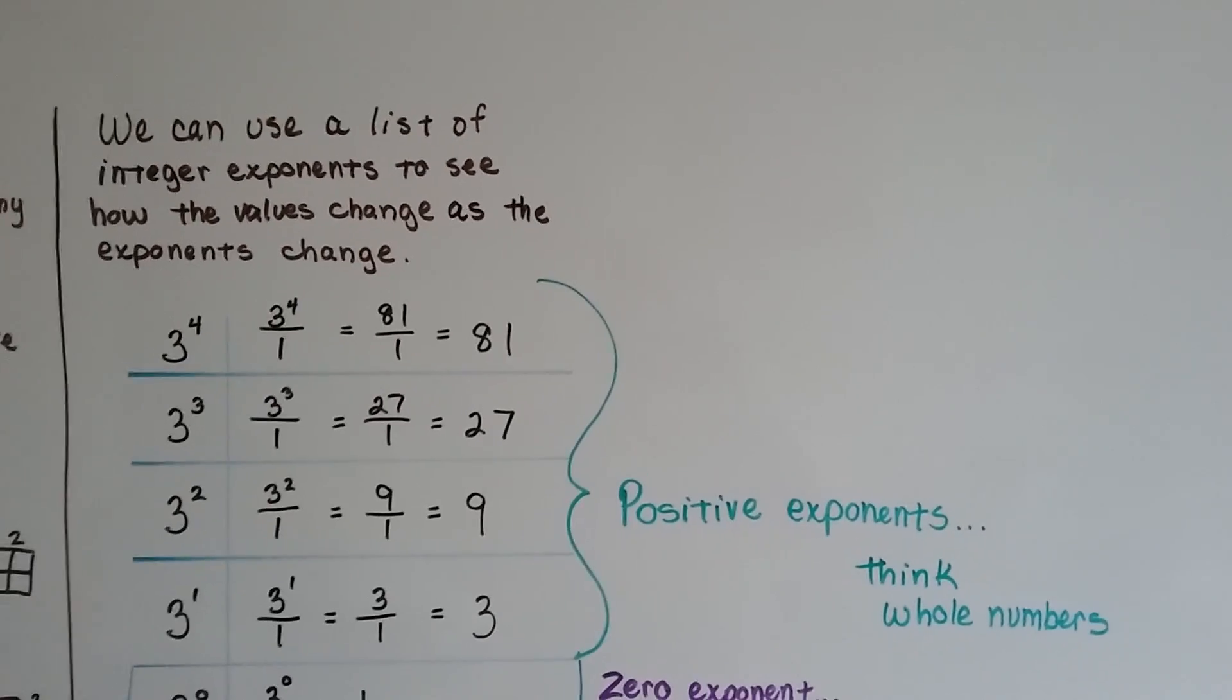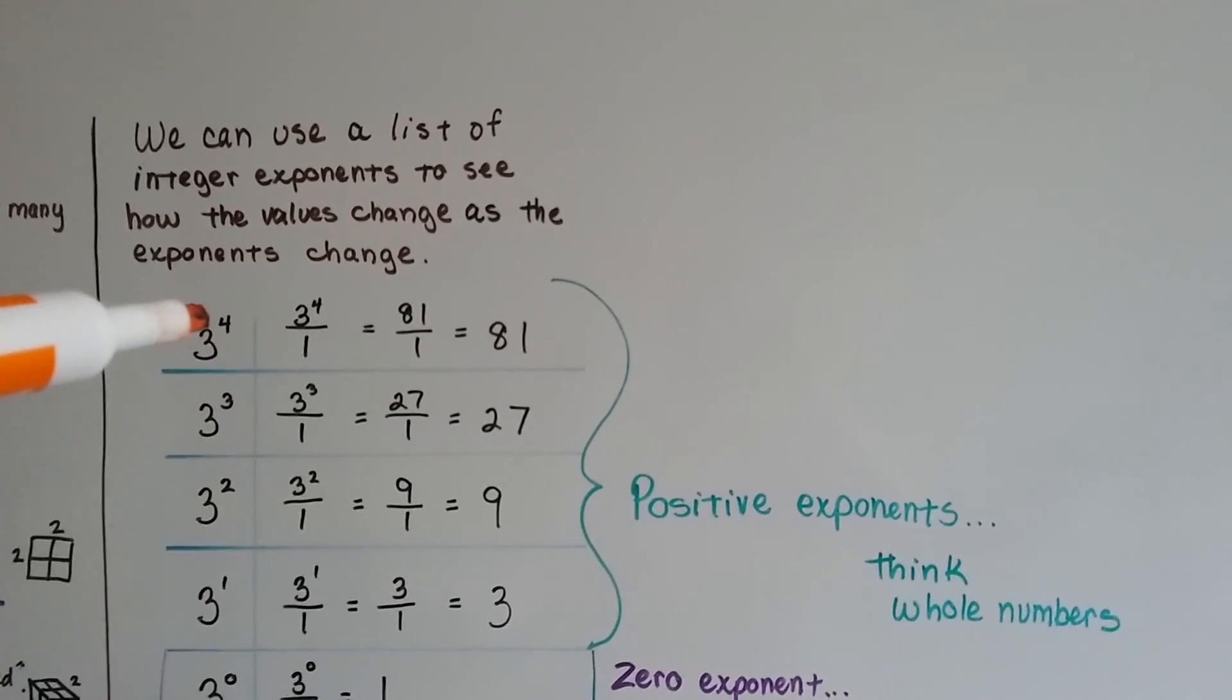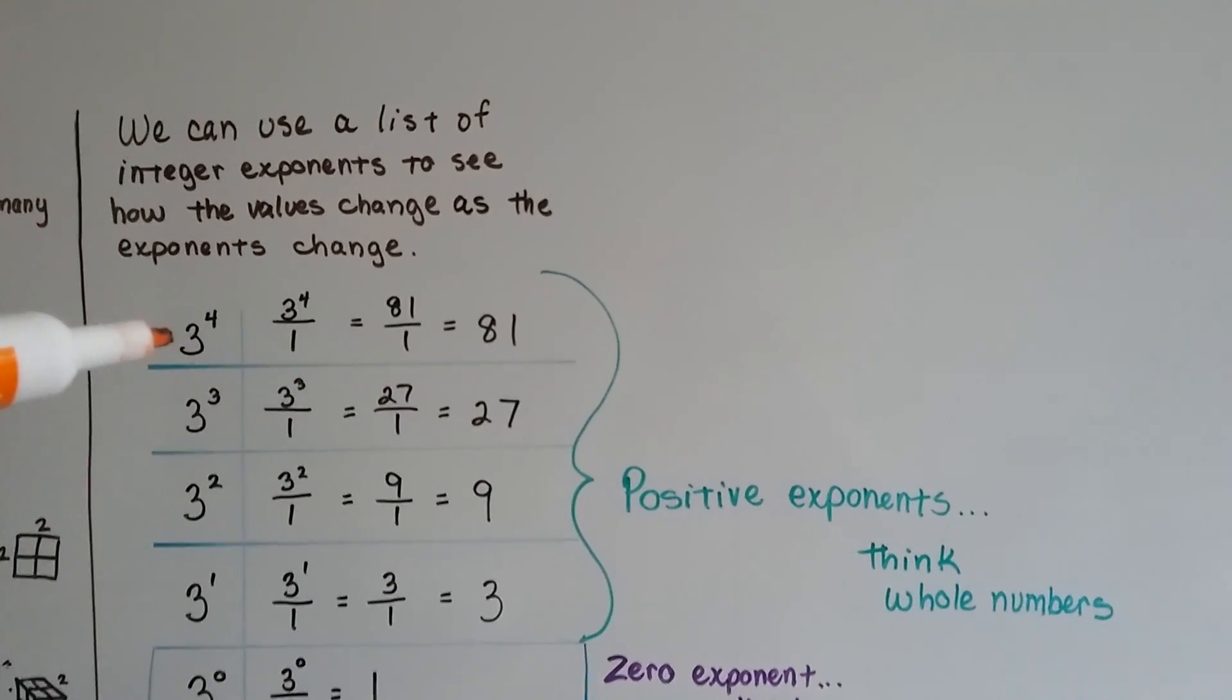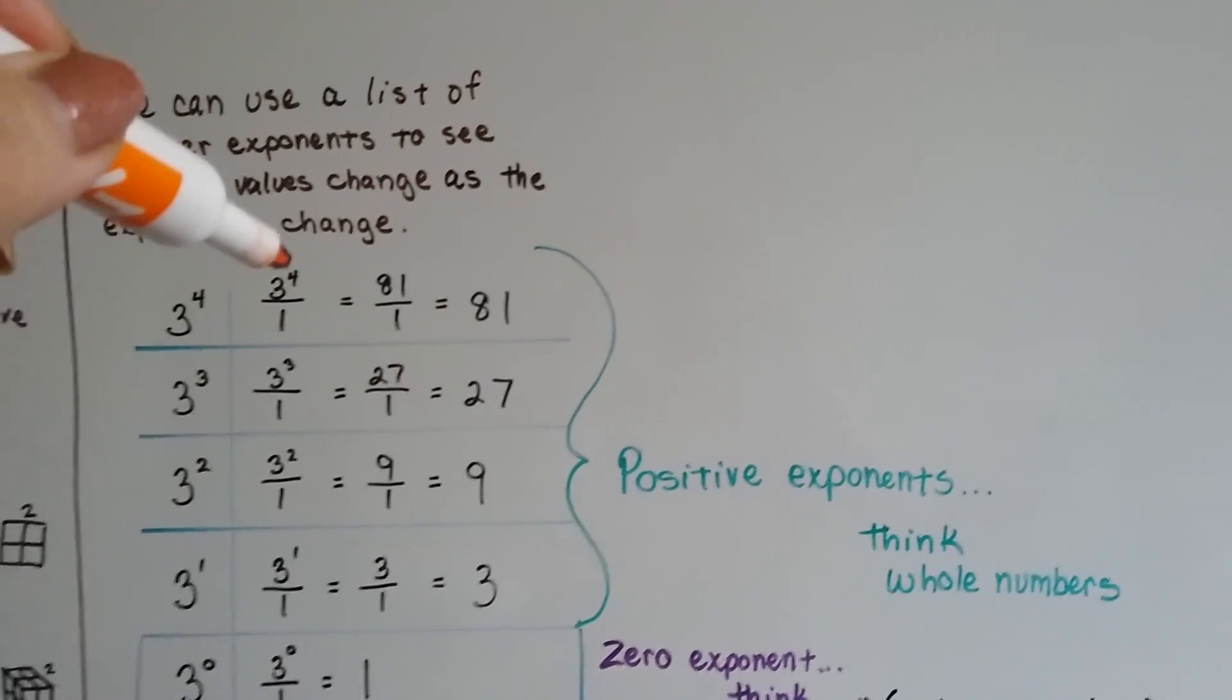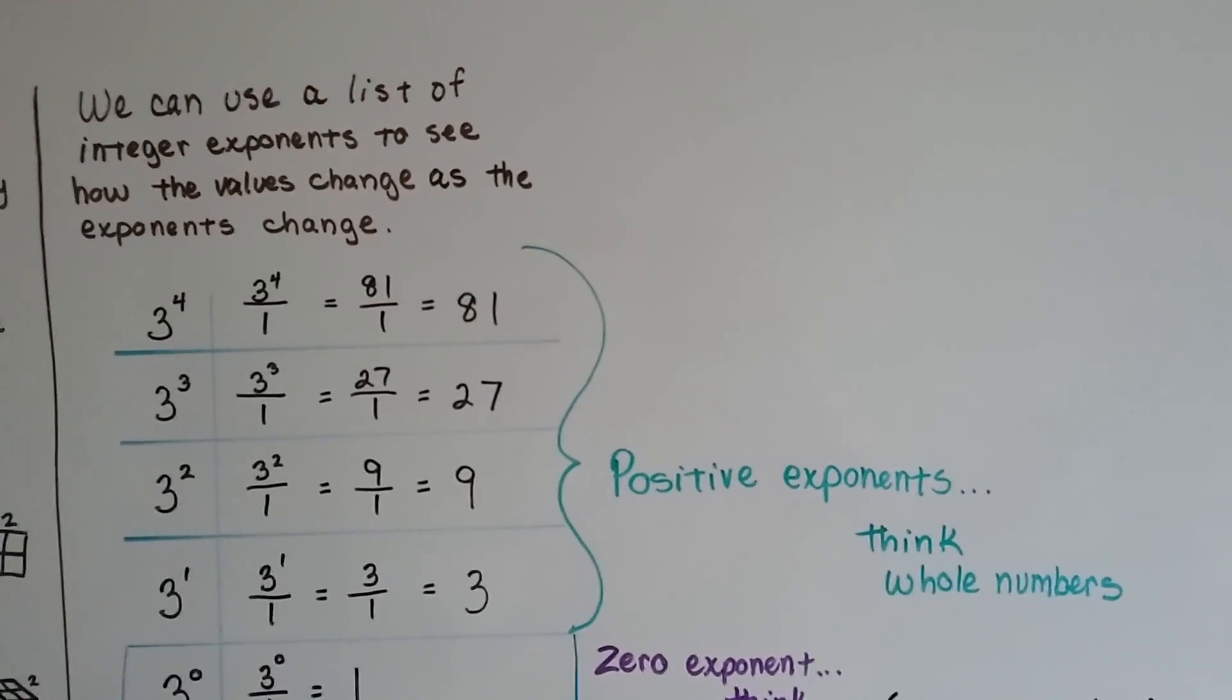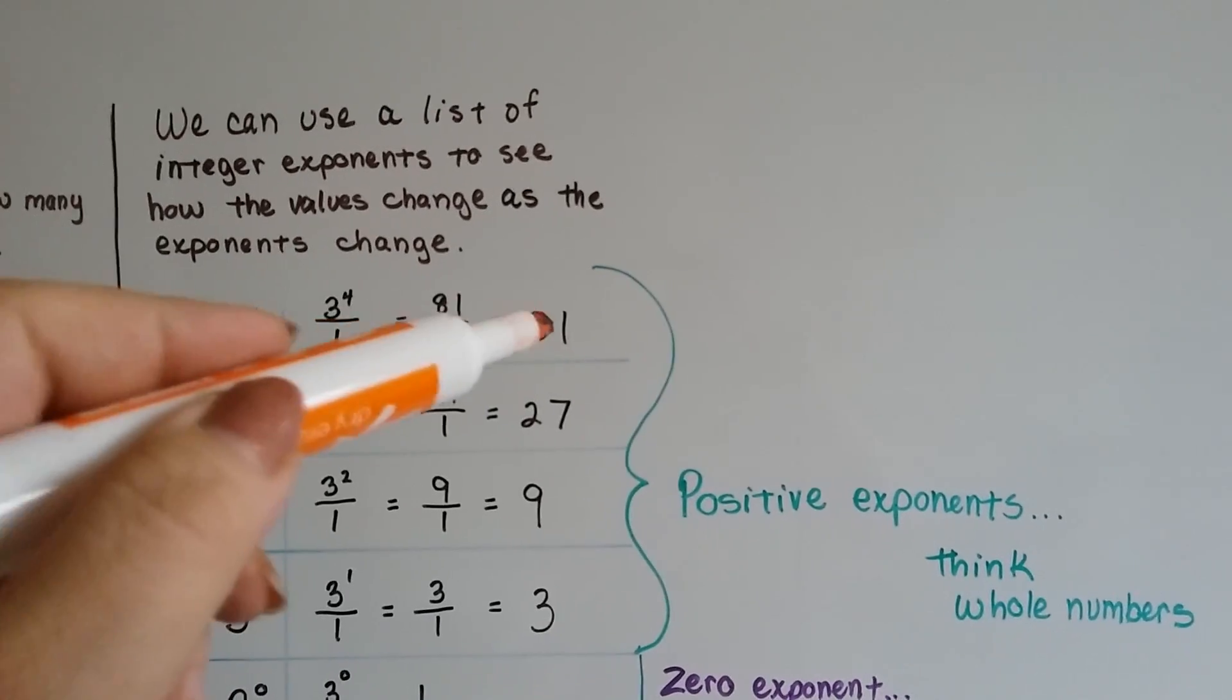The first thing I want you to notice is that these are positive exponents. The positive exponents are going to be whole numbers. 3 to the fourth power means 3 times 3 times 3 times 3. And look at it as 3 to the fourth power over 1, or 81 over 1, and that's going to equal 81. Because any number over 1 is that number.